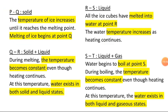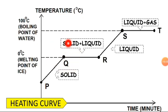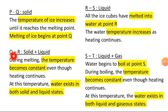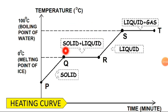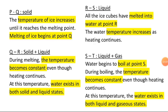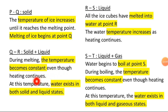P to Q is solid — the temperature of ice increases until it reaches the melting point, and melting begins at point Q. Q to R is the solid and liquid phase — during melting, the temperature becomes constant even though heating continues, because the water is trying to gain more energy to break down the force of attraction between particles. At this temperature, water exists in both solid and liquid state.